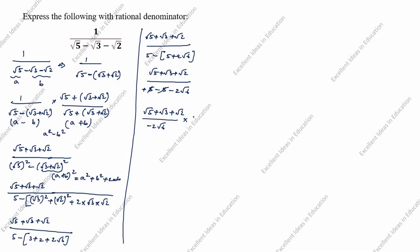We multiply numerator and denominator by root 6 over root 6. This gives: root 5 times root 6 is root 30, plus root 3 times root 6 is root 18, plus root 2 times root 6 is root 12, divided by minus 2 times root 6 times root 6.